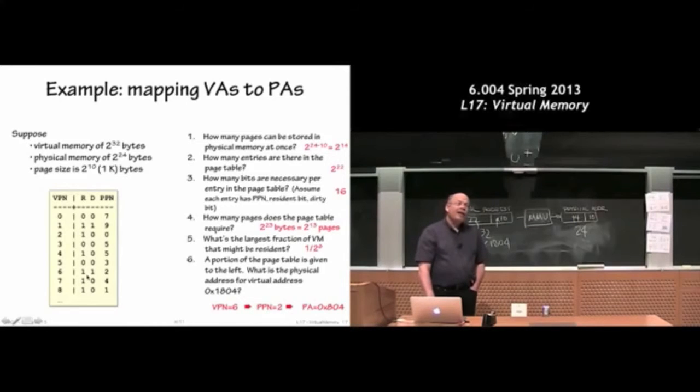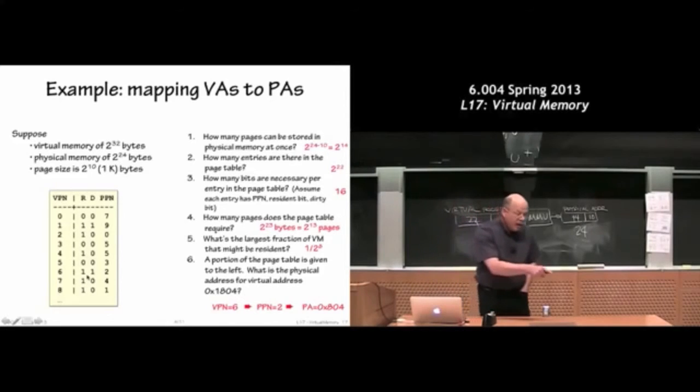Yeah, I didn't start counting at zero. How many things are on the table, Chris? Zero, one, two.